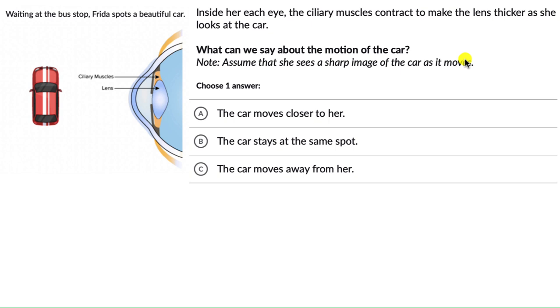Okay, so the ciliary muscles contracted, the lens became thicker. Why did that happen? Did the car move closer to her? Was the car at the same spot or did the car move away from her? Think about this.